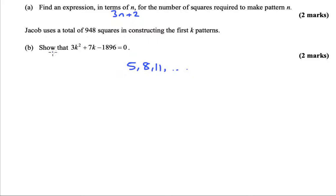Okay, part b says that Jacob uses 948 squares in total in making the first k patterns. In other words, the sum of the first k squares for some number k is 948. We know that we've got an arithmetic sequence here with a starting value of 5 and a common difference of 3.